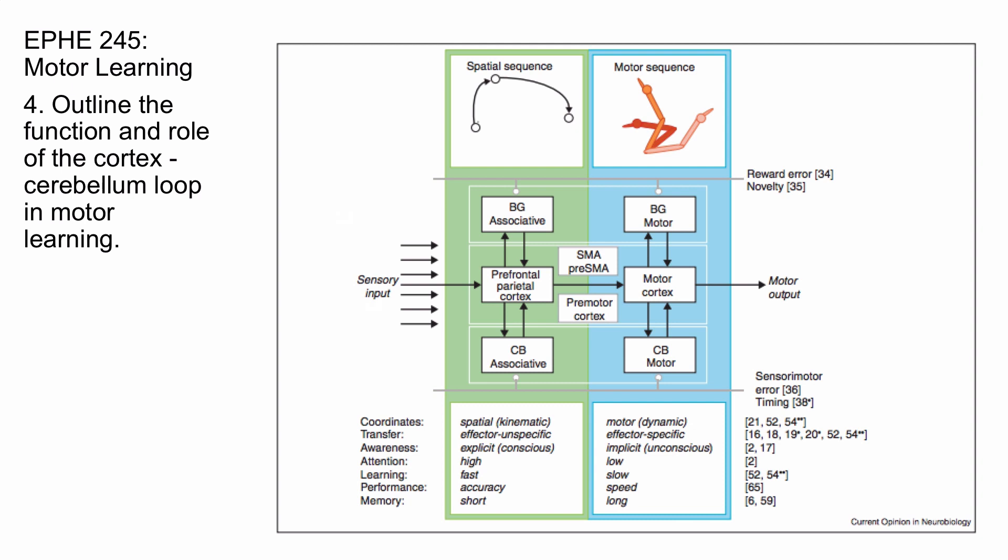But you also have the cerebellum here, and the cerebellar loop. Now, this loop also has associative and motor properties. The cerebellar associative loop has to do with the learning of spatial sequences, and the cerebellar motor loop has to do with the learning of motor sequences.